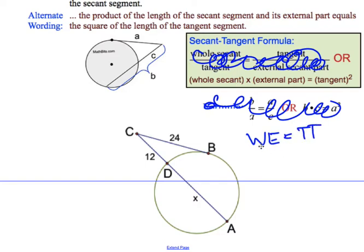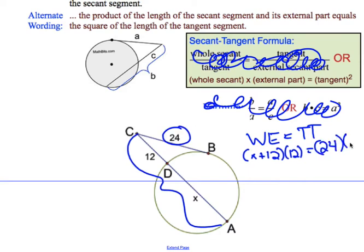So if I go to my secant side, the whole thing is going to be X plus 12 times 12. And then on this side, we basically just do 24 times 24, or we can write that as 24 squared, which is what they did right there.